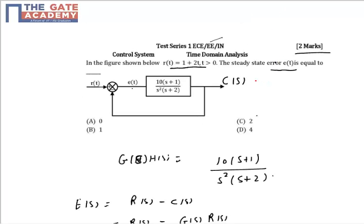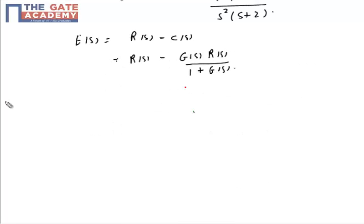H(s) turns out to be 1, so it is G(s) upon 1 plus G(s) only. Now solve this, take LCM, you will get R(s) upon 1 plus G(s). This is your error signal E(s).